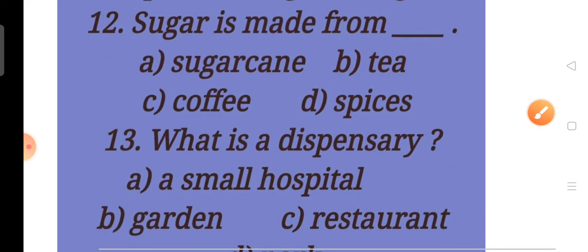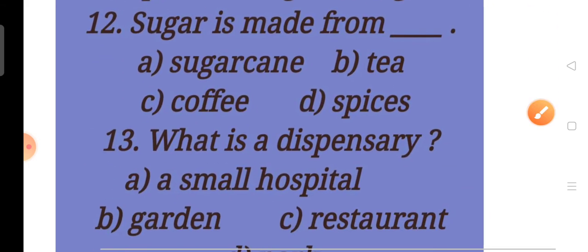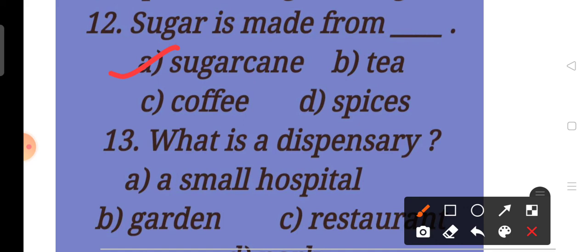Now move to question number 12. Sugar is made from dash. A. Sugar cane, B. Tea, C. Coffee, D. Spices. Children, answer will be A. Sugar cane. Sugar is made from sugar cane.